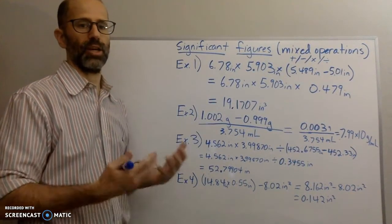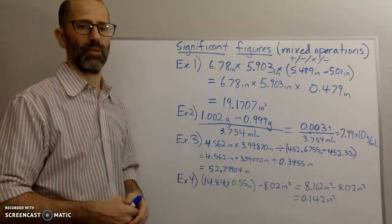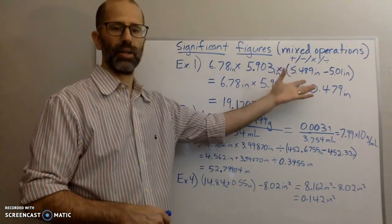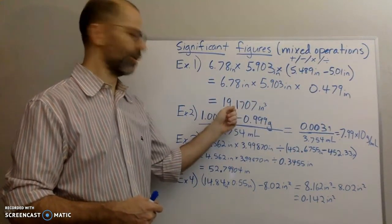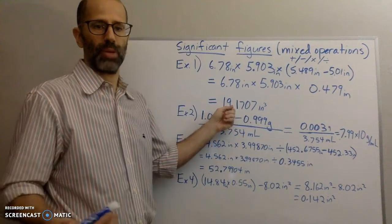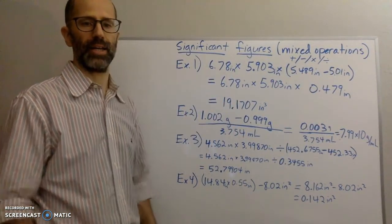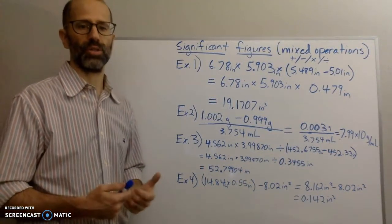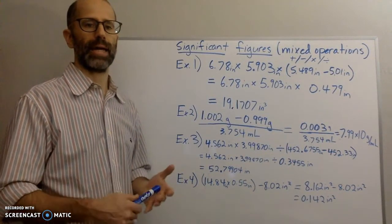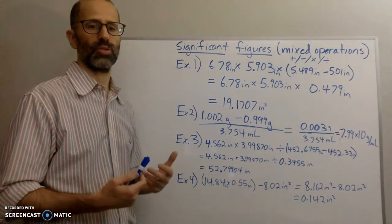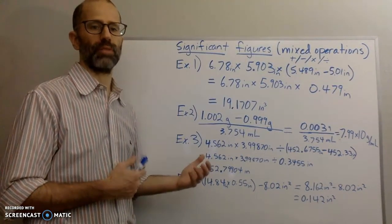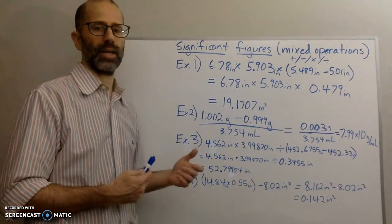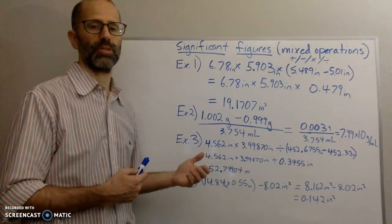So when you get that final answer, you need to figure out how many digits to keep from your calculator. You can put all of this into your calculator and it'll spit out an answer, but then you have to figure out how many digits to keep — because you multiplied and divided. Remember that for adding and subtracting, the rule is the answer should have the least number of decimal places, but for multiplication and division, the answer should have the least number of significant figures.